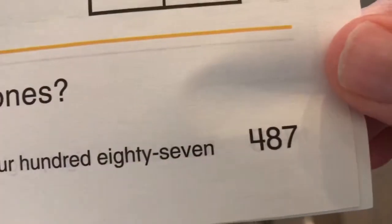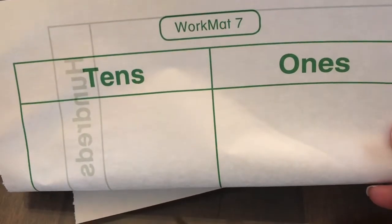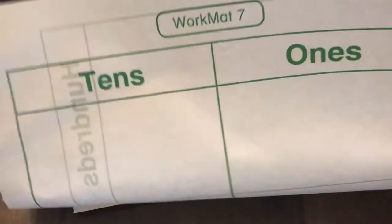You need to have page 487, and you also are going to need to have this page called Work Mat 7 that is in the back of your book. It has the tens and ones chart on it.